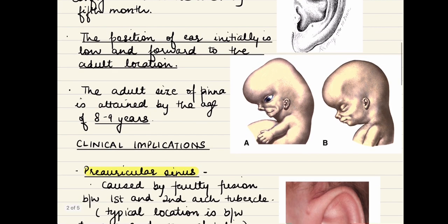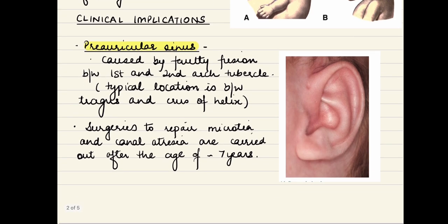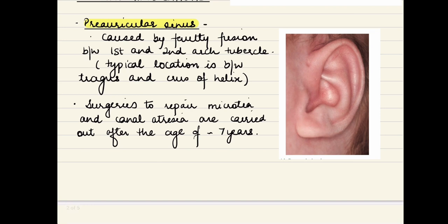An important clinical implication related to external ear development is the preauricular sinus, which is formed by faulty fusion between the first and second arch tubercles. The typical location is at the area between the tragus and the crus of the helix — a typical pit formed by this faulty fusion. Another clinical application is that surgeries related to repair of microtia and canal atresia are usually performed after 6 to 7 years of age, because most development of the external ear is complete by this age.